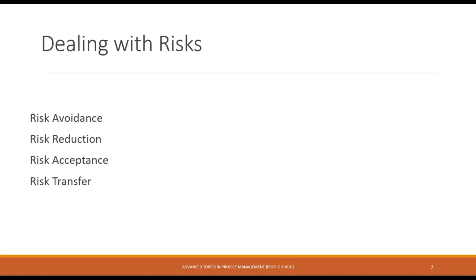In order to deal with risk, there are four primary ways to handle risk in the professional world, whatever the industry may be. These include: avoiding the risk, reducing or mitigating the risk, accepting the risk, and transferring the risk.